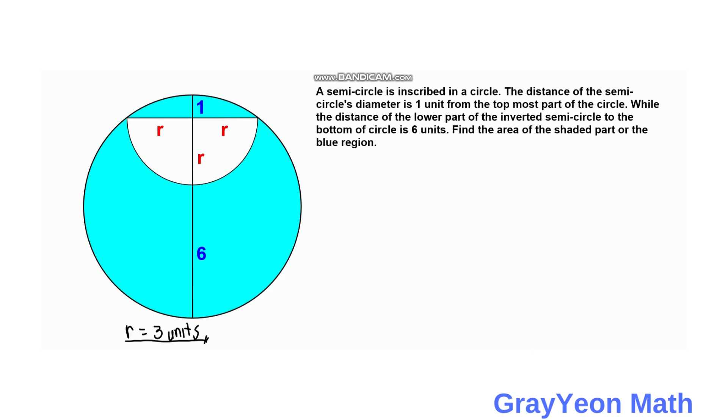Okay, so for the final step, we just need to find the area of the shaded region. The area of the shaded region is equal to the area of the circle, which has the diameter of 6 plus R plus 1. We can say that it is pi times 6 plus R, which is 3, plus 1 square over 4.